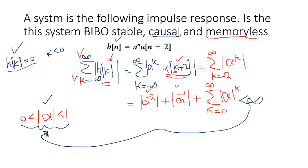The third question is about memory. To check this, the impulse response for a memoryless LTI system must satisfy H(K) = 0 for all K ≠ 0. Looking at the given system, H(K) is non-zero for negative K values, so this condition is not satisfied. Therefore this system has memory — it is an example of a system with memory.